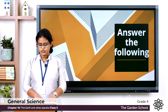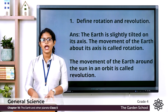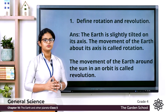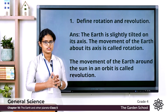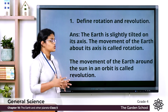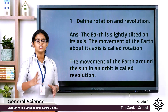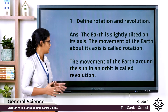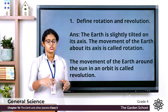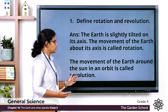Moving to the next exercise — answer the following questions. First one: Define rotation and revolution. The earth is slightly tilted on its axis. The movement of the earth about its axis is called rotation. Revolution is the movement of the earth around the sun in an orbit — a definite path.